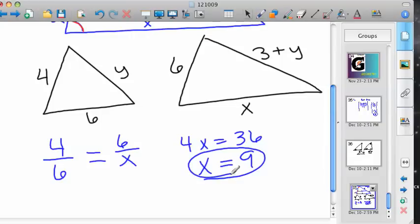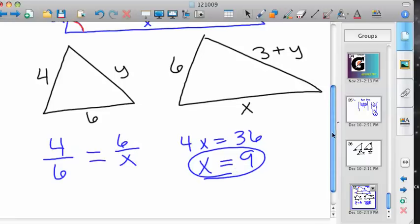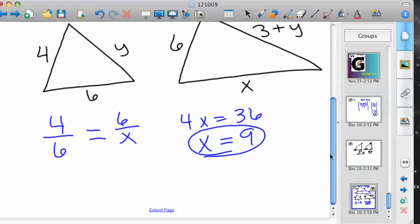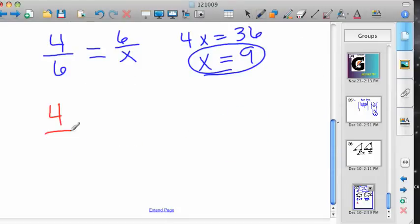And then the second, for y, you do exactly the same thing. We'll just do it in a different color. 4 to 6 and y to 3 plus y. So let me try to remember that: 4 to 6 equals y to 3 plus y. And again, you can cross multiply that.